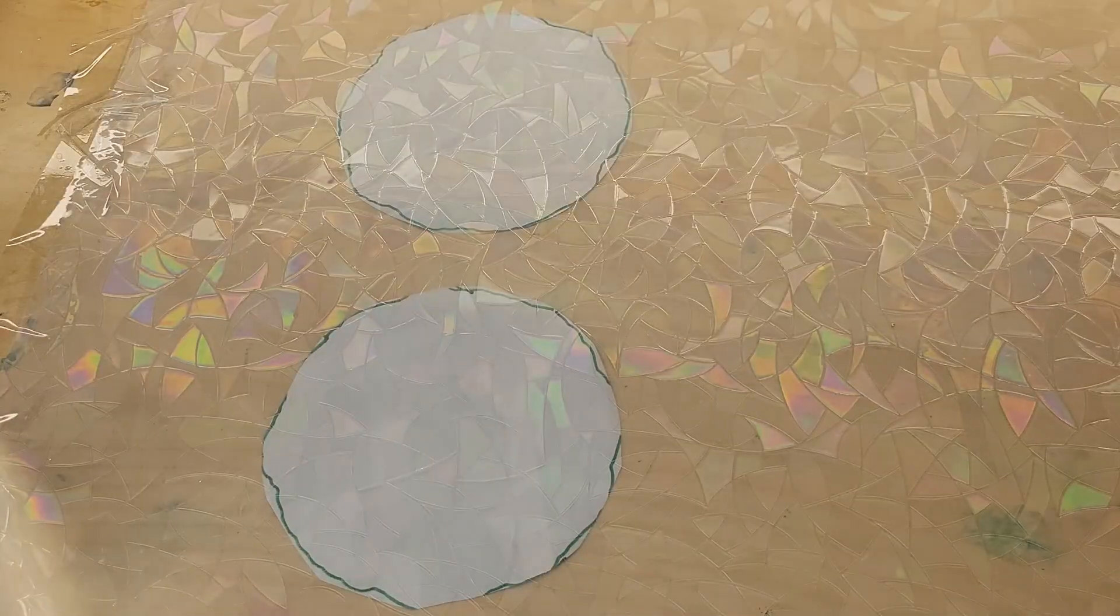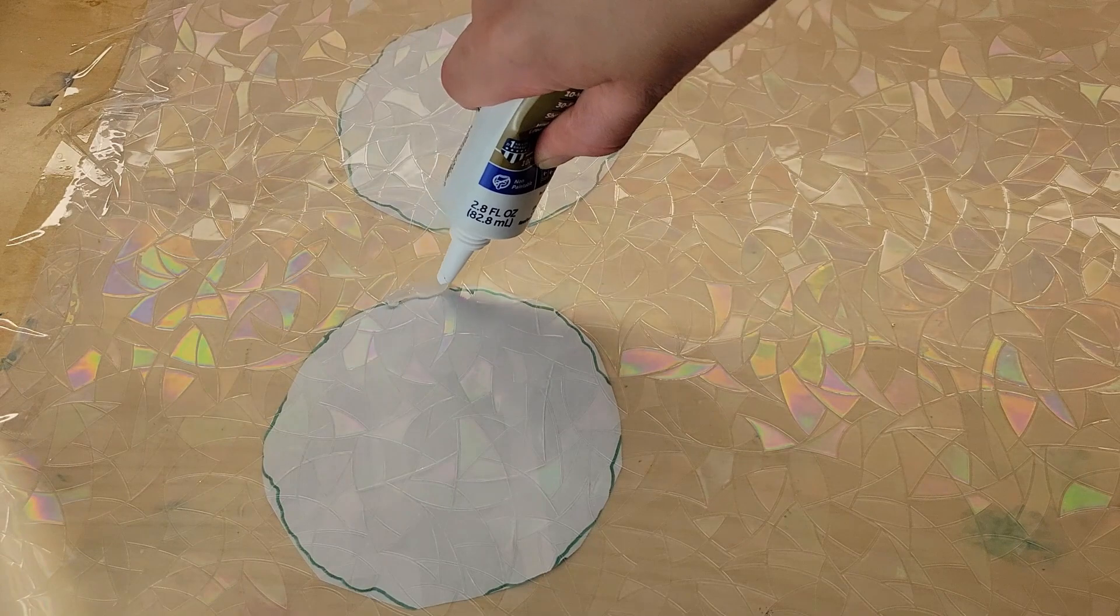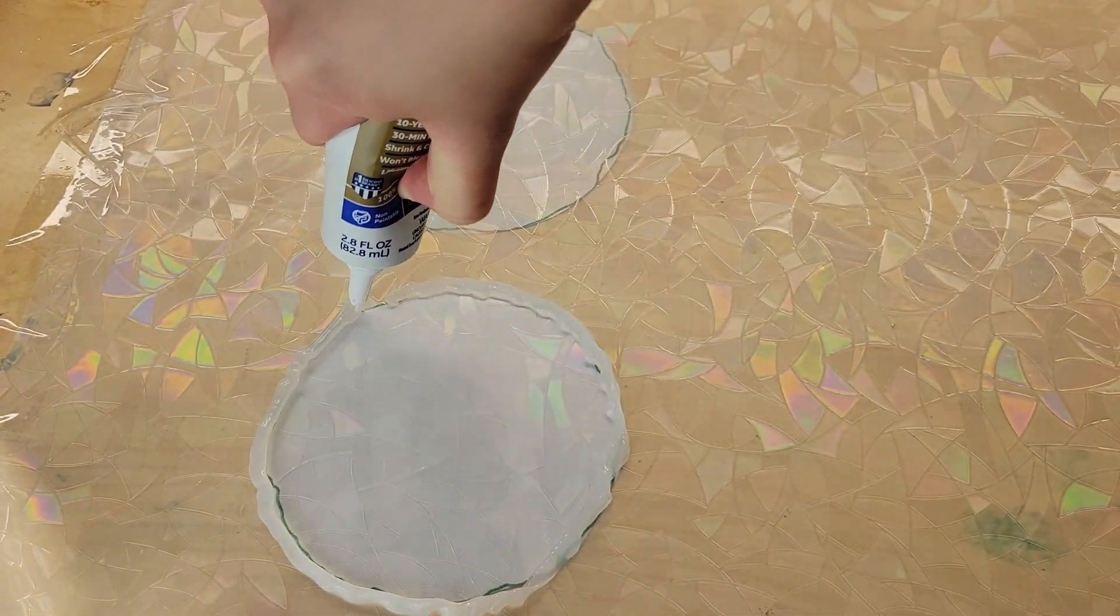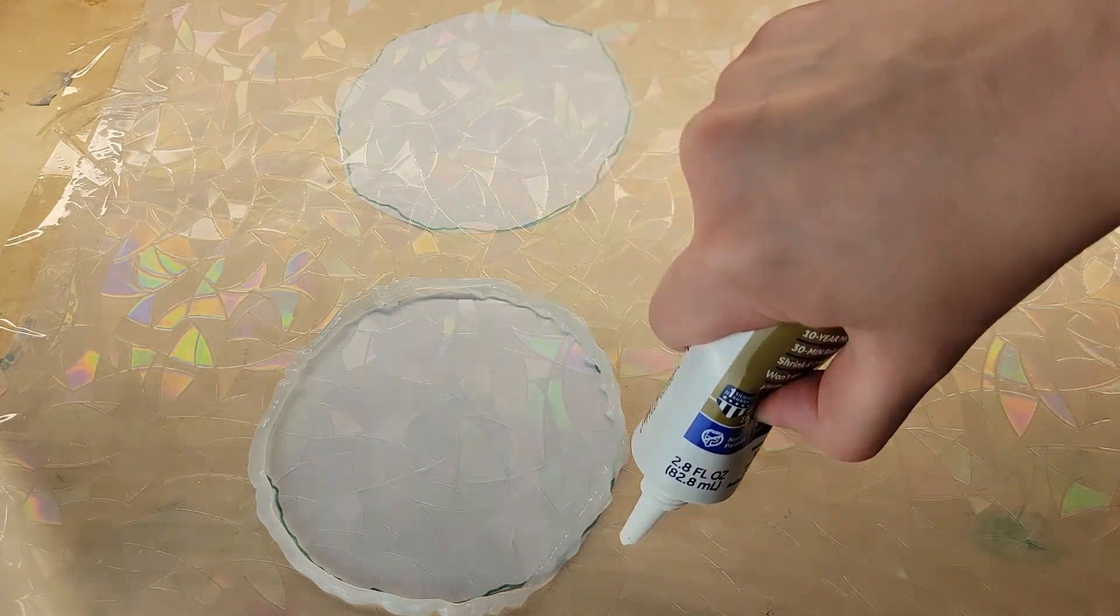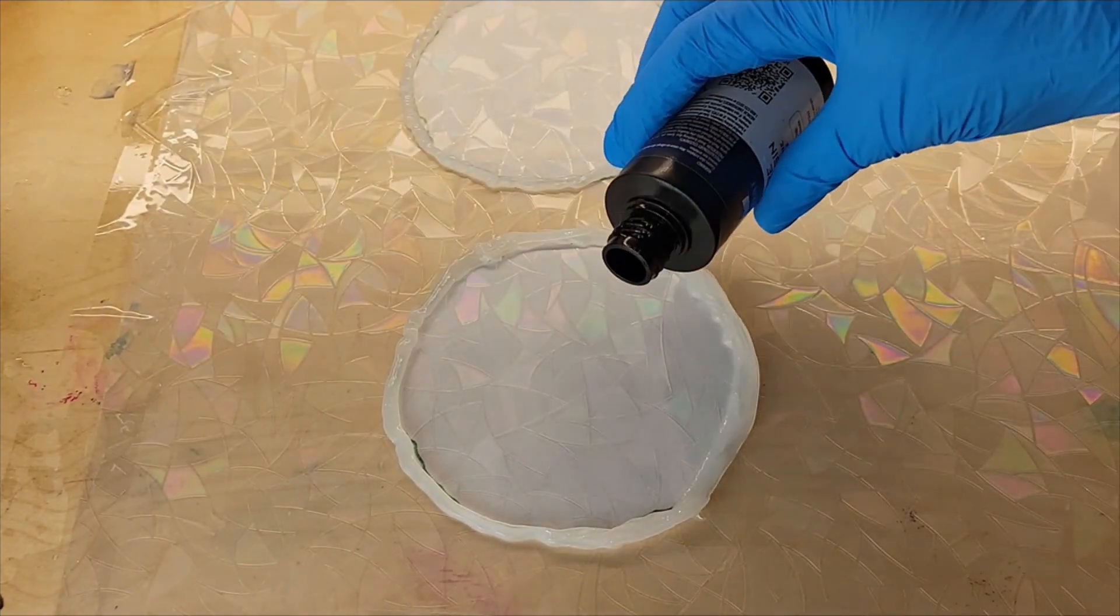I'm just going to flatten this out, tape it down. You want to make sure there's no wrinkles on this. If there's wrinkles, then your piece will end up with wrinkles. So just take your time, make sure it's completely flat, tape it down. And I did make a little template just on a sheet of paper for the size that I wanted. I slid it underneath the film.